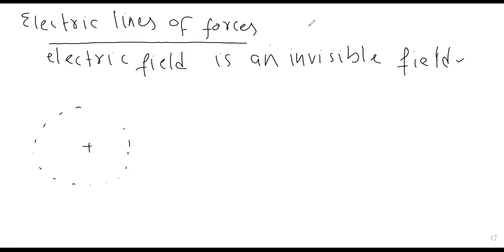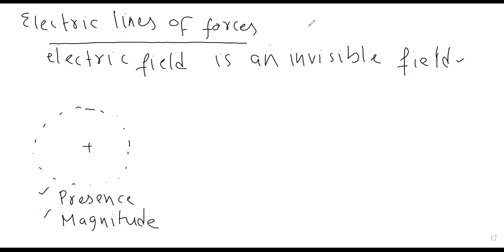Pehli representation: circle representation — yani positive charge ke around ek circle bana do. Yahan se kya clear ho raha hai? Yahan se ek cheez to clear ho rahi hai: the presence of electric field — yahan electric field maujood hai. Lekin electric field ki magnitude kahan zyada hai, kahan kam hai, woh nahi pata chal raha. Aur direction — electric field being a vector quantity, what would be its direction — woh bhi nahi pata chal raha.